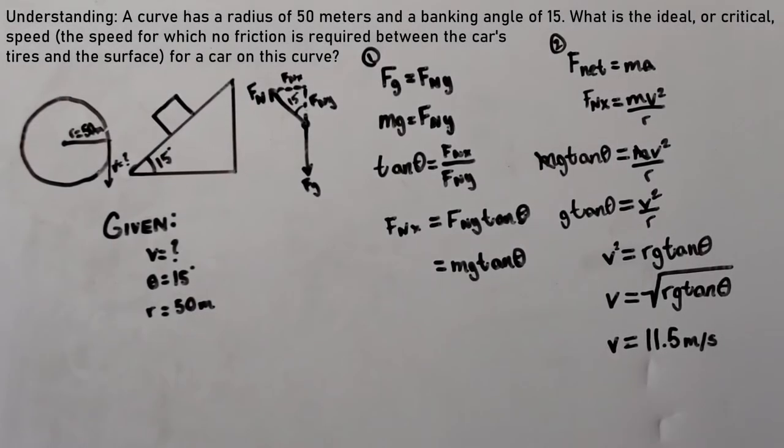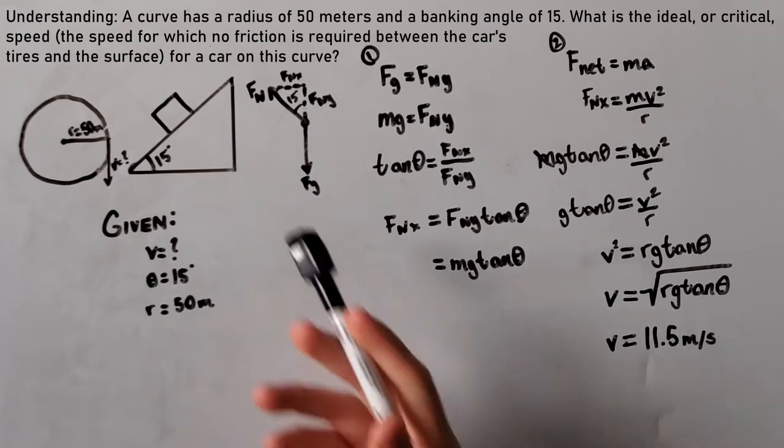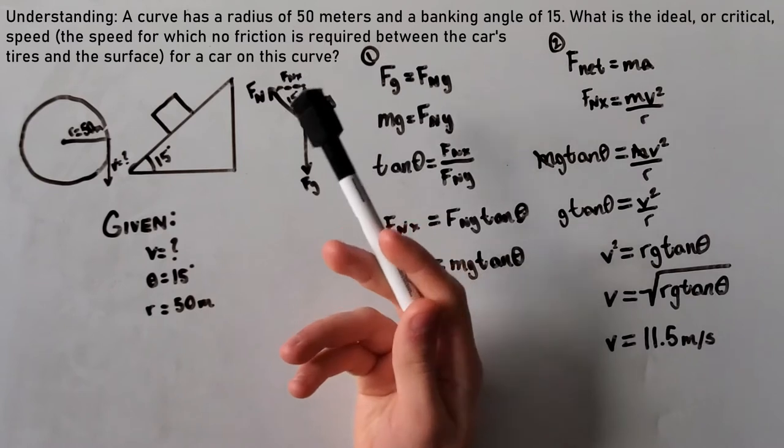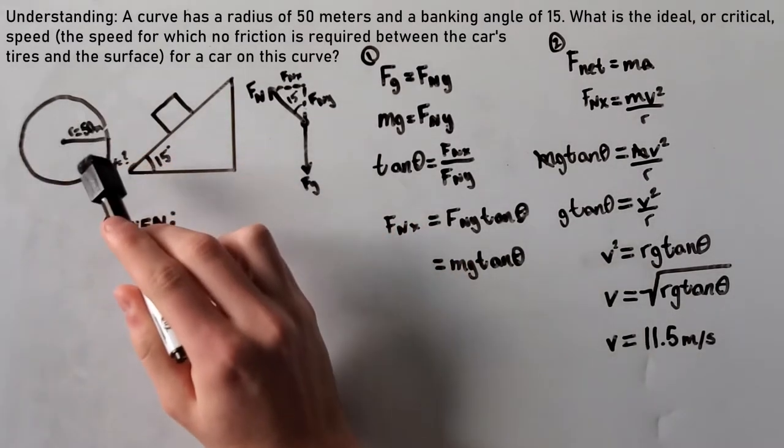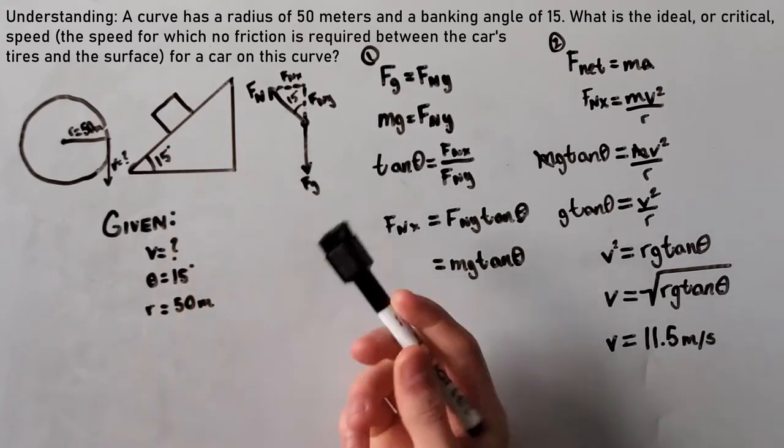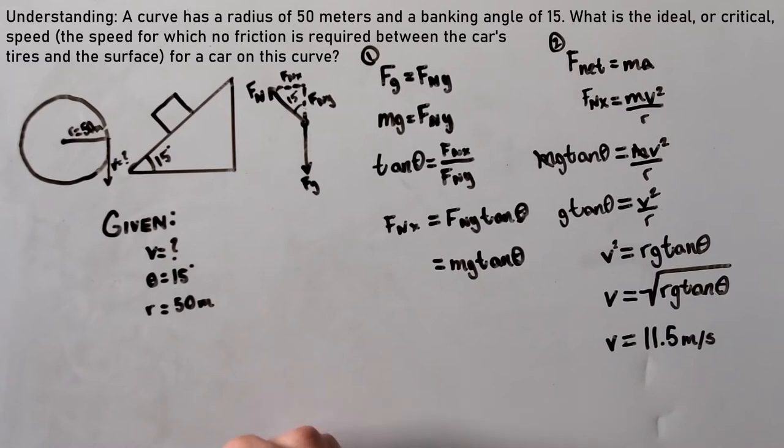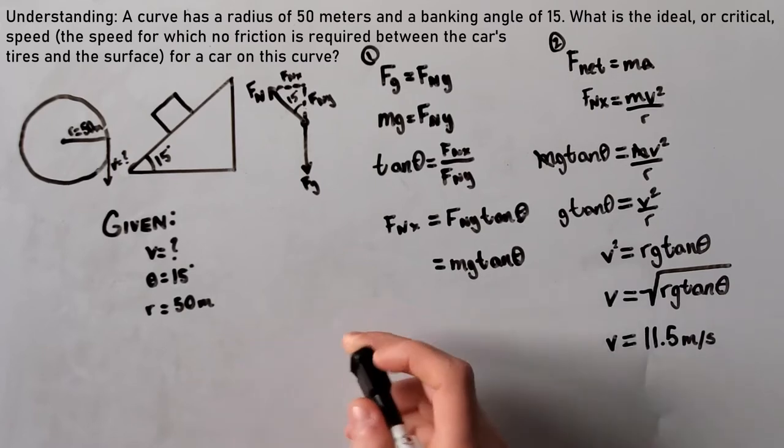Question number two says that a curve has a radius of 50 meters and a banking angle of 15 degrees. What is the ideal or critical speed, the speed for which no friction is required between the car's tires and the surface, for a car on this curve? These are banked curve problems, and because there is a car on an angle going around in a circle, it applies to our circular motion definition. We look at all of our givens, and you can see we don't have much. We only have our radius, which is 50 meters, and our theta, which is 15 degrees. Unlike the previous question, which gave us every single variable that we needed to plug into our equation.